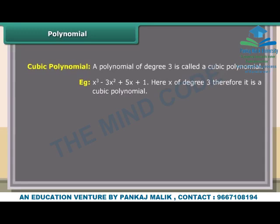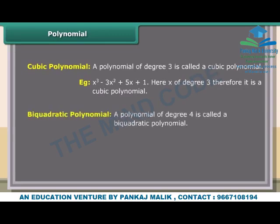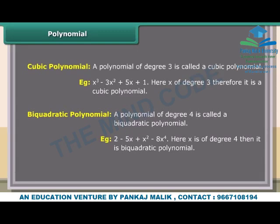Cubic polynomial: Here x is of degree 3, therefore it is a cubic polynomial. Biquadratic polynomial: A polynomial of degree 4 is called a biquadratic polynomial. Example: 2 − 5x + x² − 8x⁴ — here x is of degree 4, therefore it is a biquadratic polynomial.